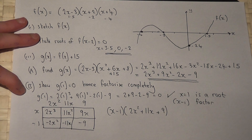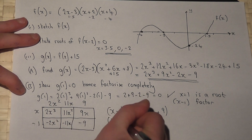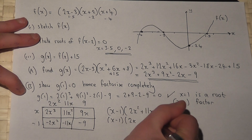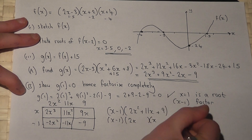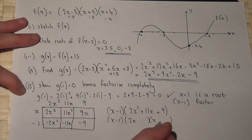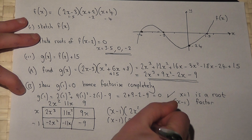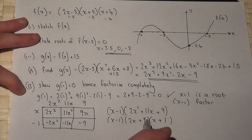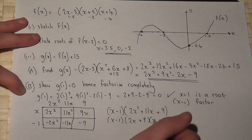So I've found that the factors are x minus 1 and 2x squared plus 11x plus 9. To factorise fully I then factorise that second bracket. To get 2x squared requires 2x and x. To get 9 we try 9 and 1. Putting plus 9 and plus 1 gives 2x squared, and 9x plus 2x is 11x, and 9 times 1 is 9. So this is g of x fully factorised.